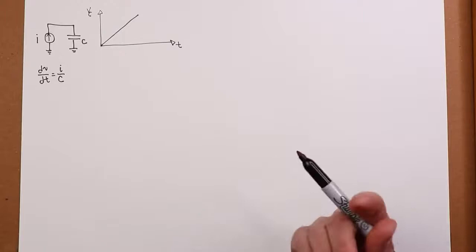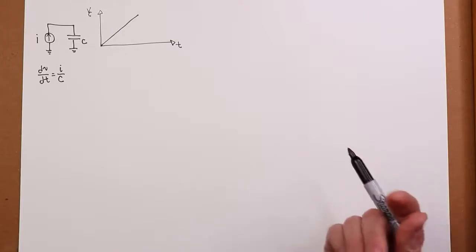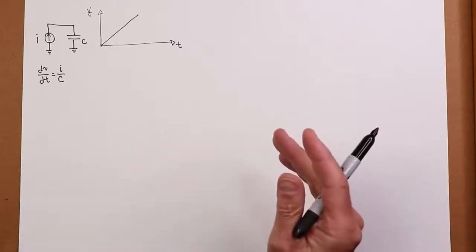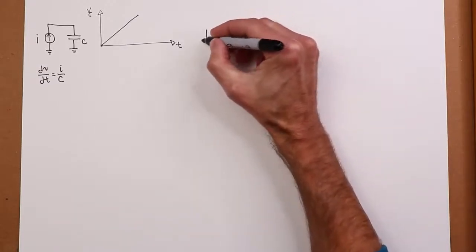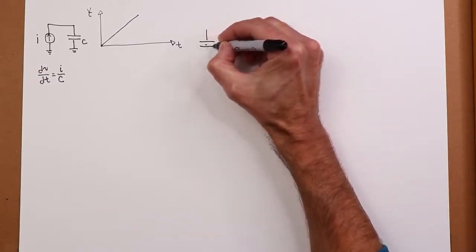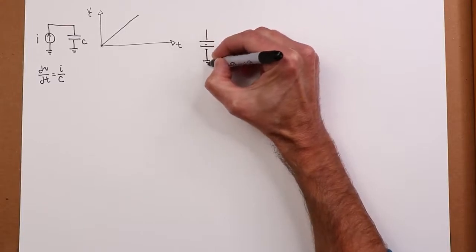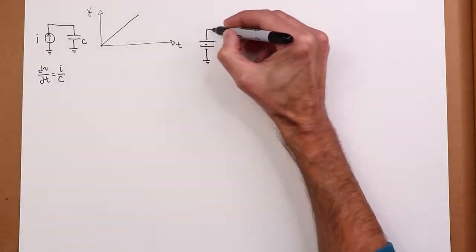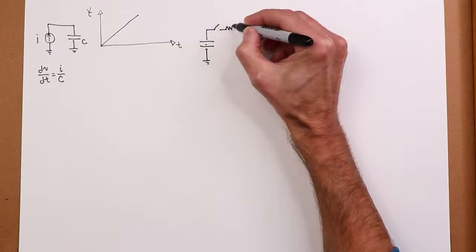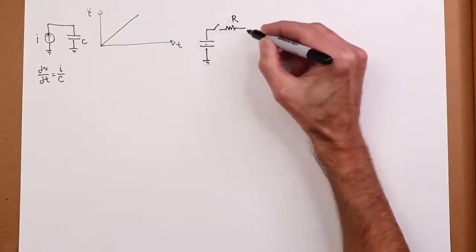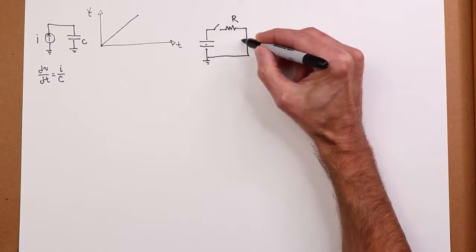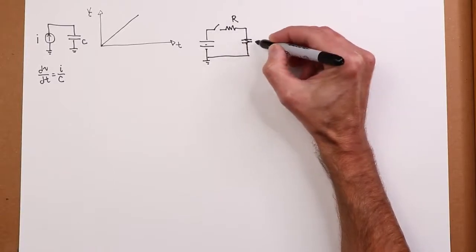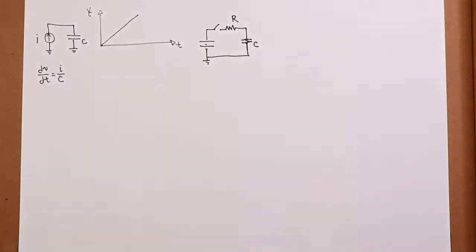If I have a circuit driven by a voltage source, we get something a little bit perhaps more interesting. Let's take a simple RC circuit. I'm going to put a little switch in here. Here's my resistor R and my capacitor C.